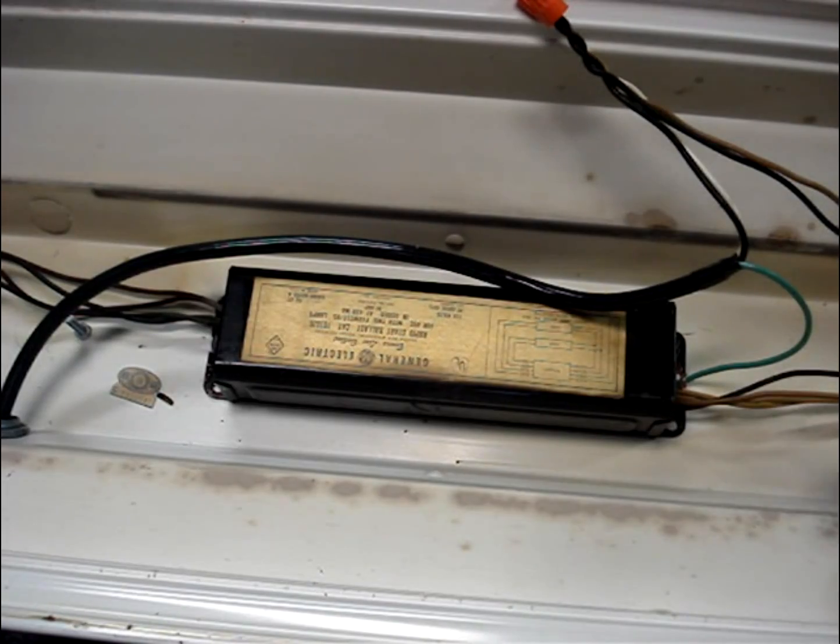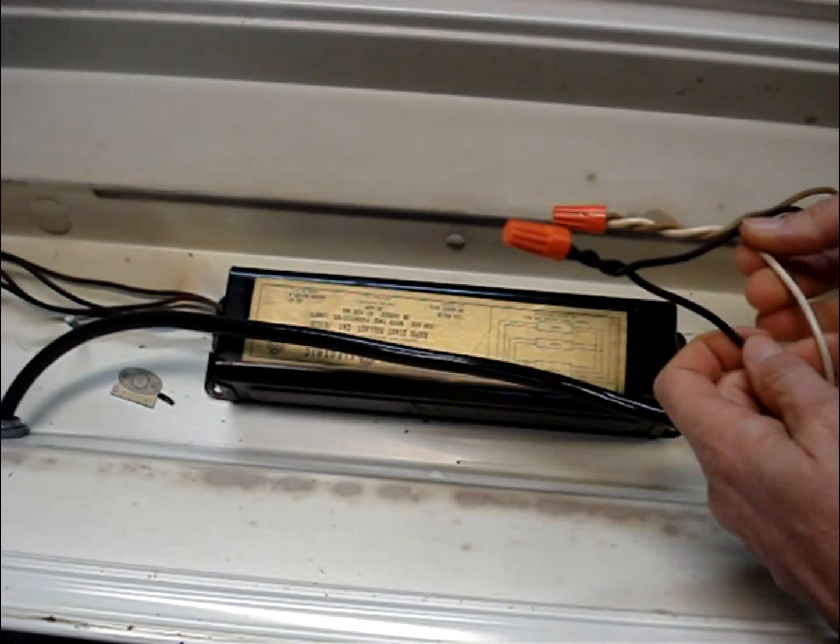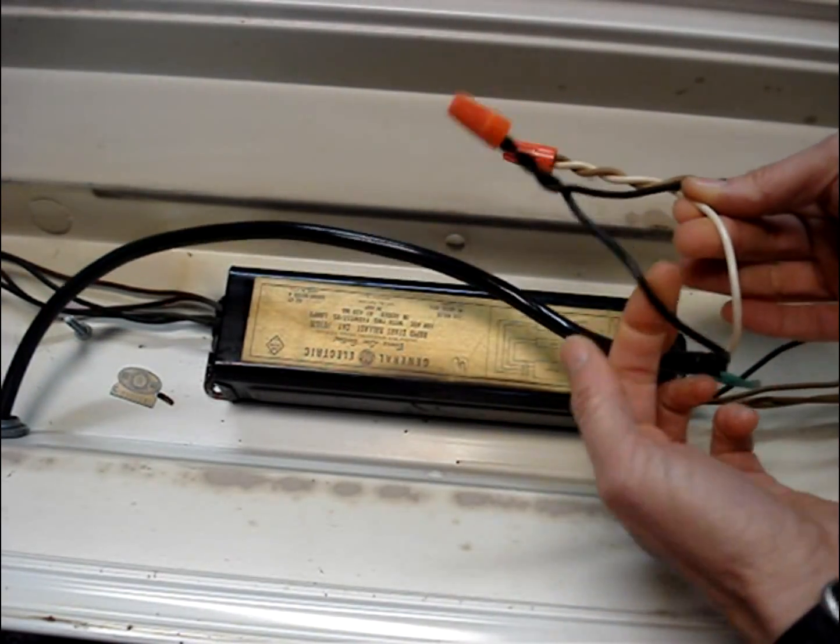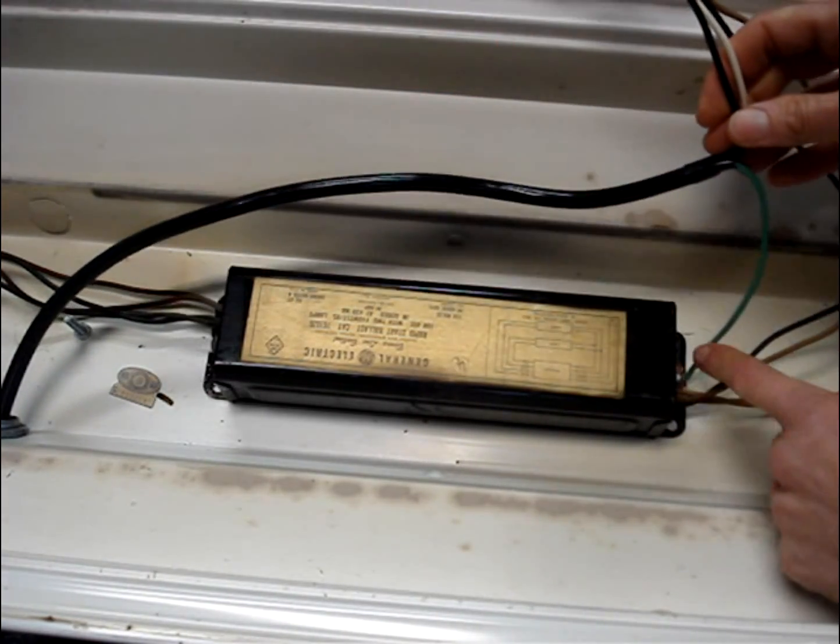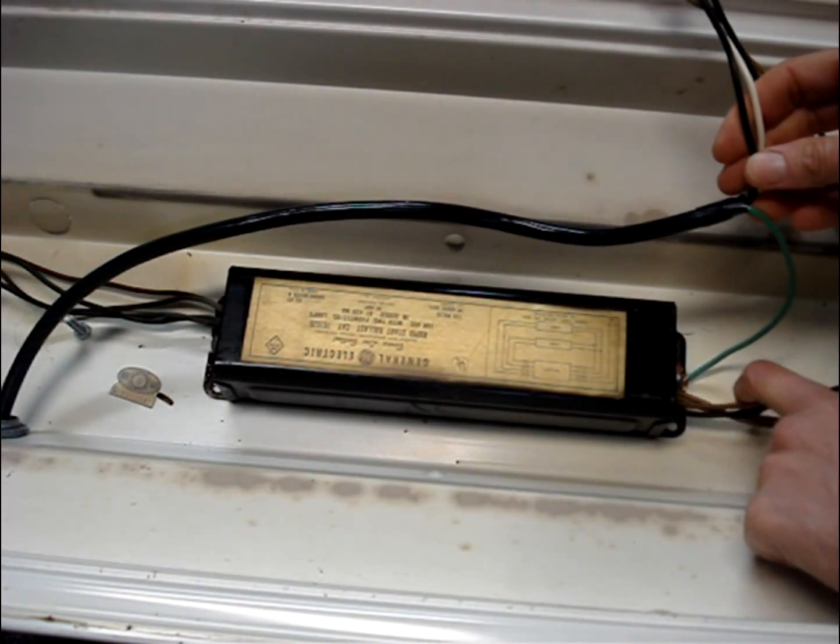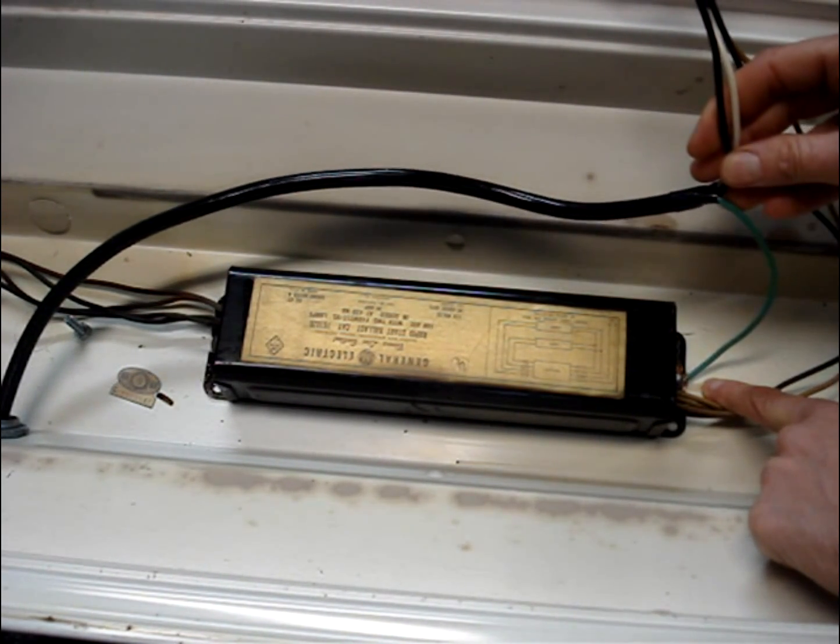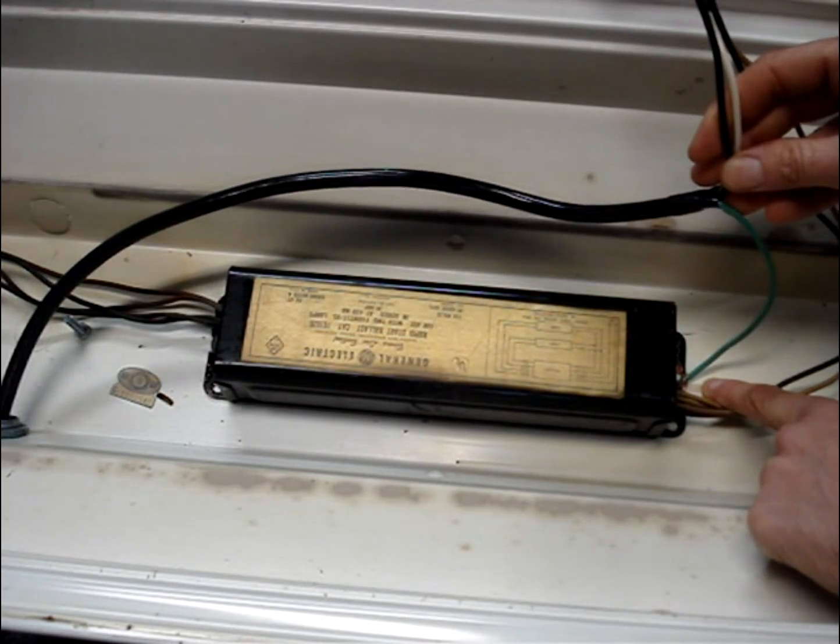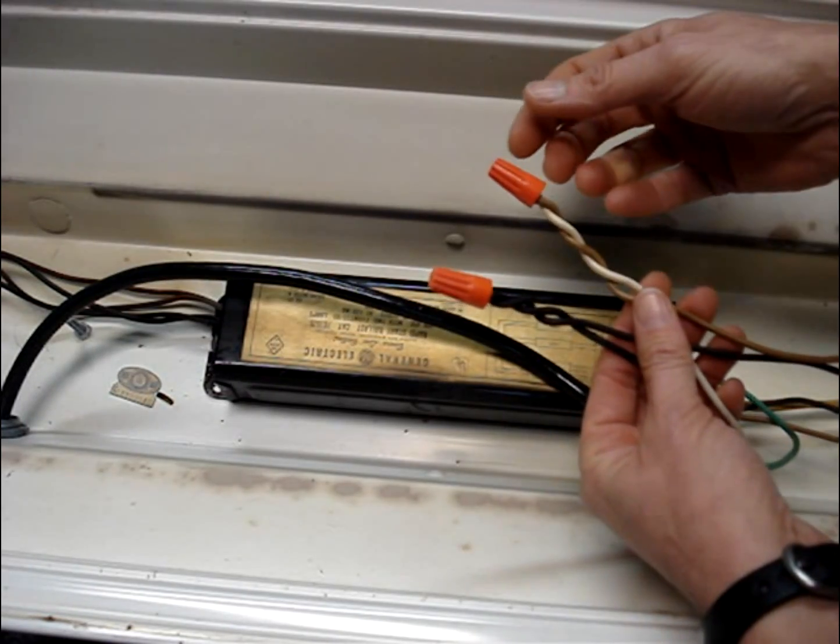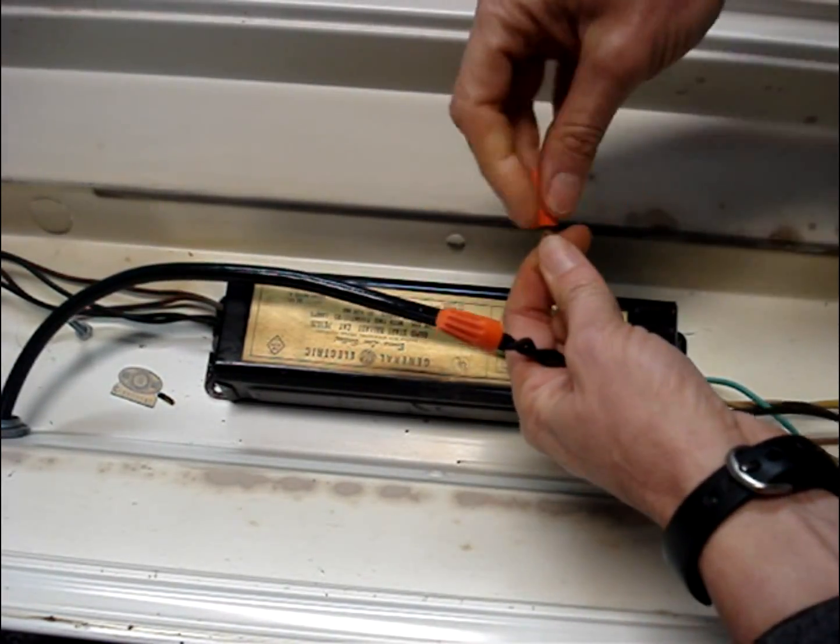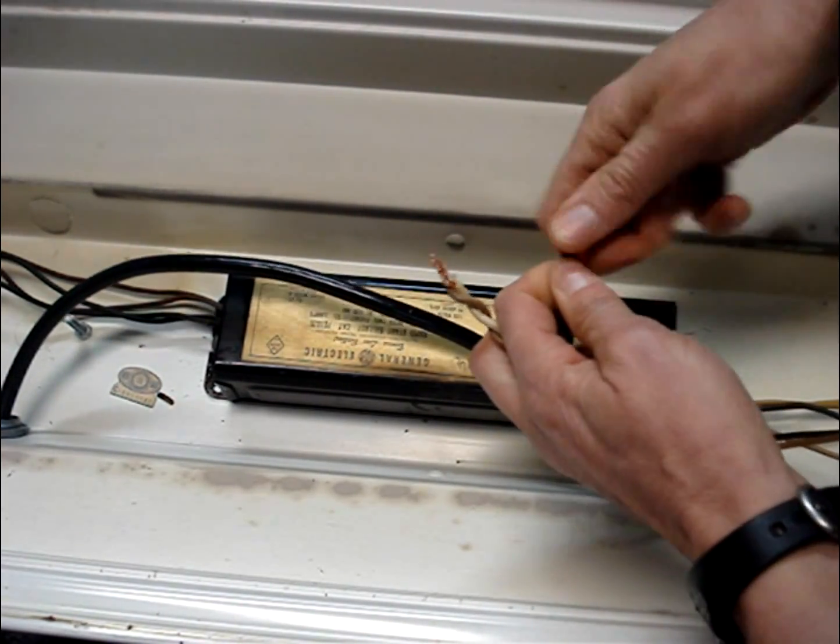Identify where the power feeds into the ballast and you should see a black wire for the hot, white for the neutral, and a green ground wire that should be fastened to the metal enclosure for the light. If you haven't already removed power to the fixture, you'll need to do that. Then disconnect the hot and the neutral wires from the ballast.